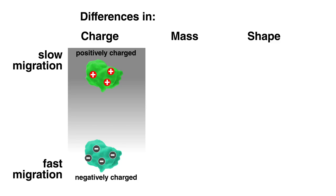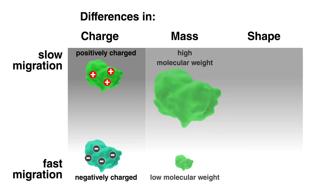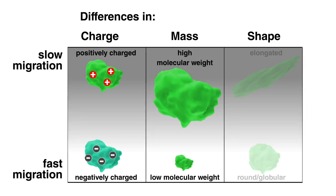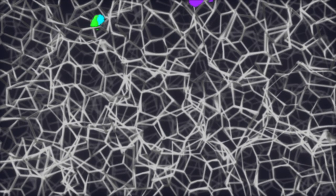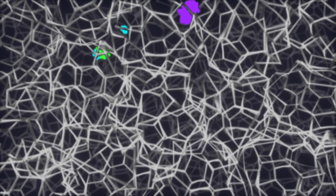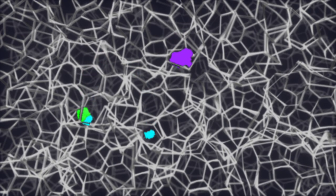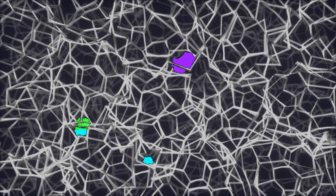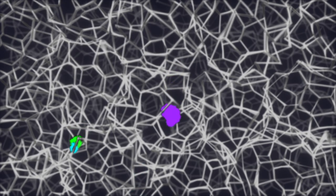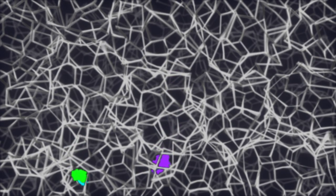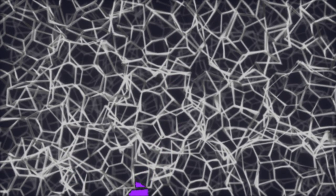Since proteins retain their native, folded state when running a native PAGE, their mass, as well as their shape, will also impact their migration through the gel matrix. Small, compact proteins will migrate faster through the gel matrix, while large or elongated proteins will migrate more slowly. Therefore, native PAGE can be used to assess the addition of a charged chemical modification, the binding of additional molecules or proteins, and a protein's quaternary structure.